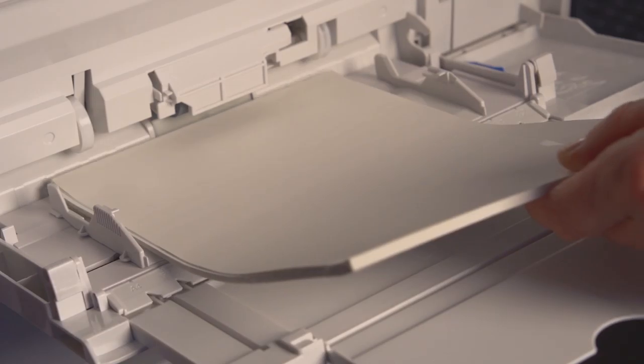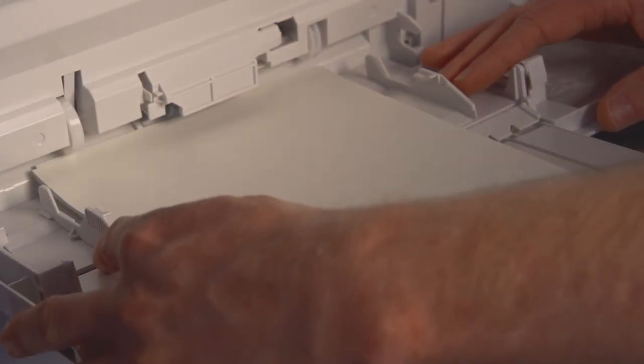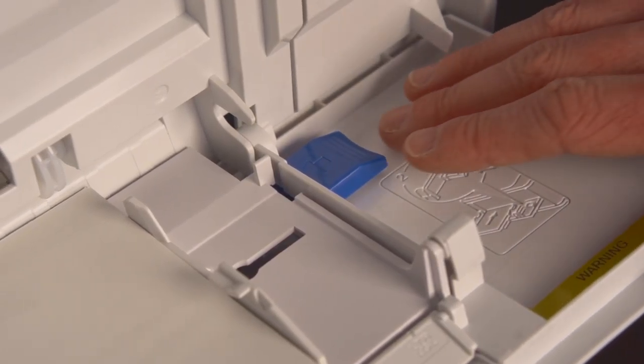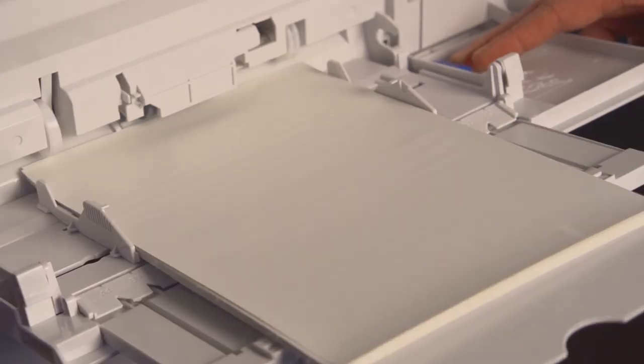Then load the supply and adjust the paper guides to the size of supply being used. Press the blue tray latch button to the left to raise the platform so that the supply is lifted and gripped in place.